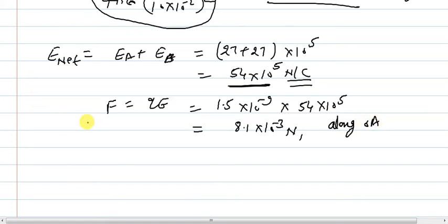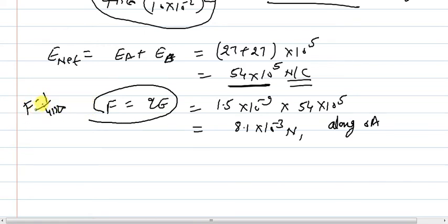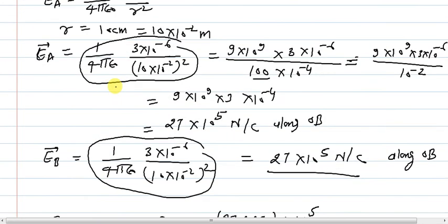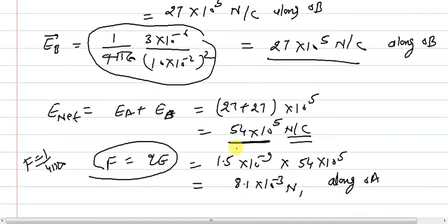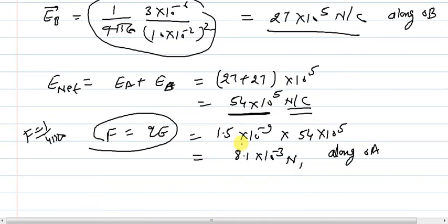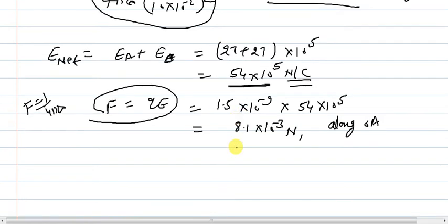By using Coulomb's law also you can calculate this force: F = (1/4πε₀) × q1q2/r², using q1 = 3 × 10⁻⁶ and q2 = 1.5 × 10⁻⁹, which gives the same answer. That was question 8. Now we will go to the next question.